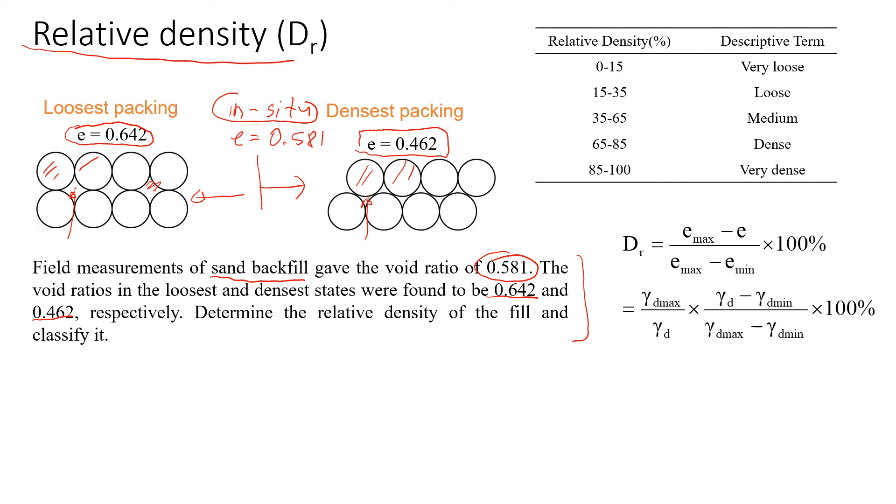To estimate the relative density, we use these two formulas. Most of the time, we're going to use this formula when we have this void ratio, maximum void ratio, this is minimum void ratio, and this is the void ratio of the sand in situ. There's another way to estimate relative density when we use either dry unit weight or dry density. This is the formula, but we don't use it very commonly in practice. The relative density usually comes as percentage, so we multiply by 100%.